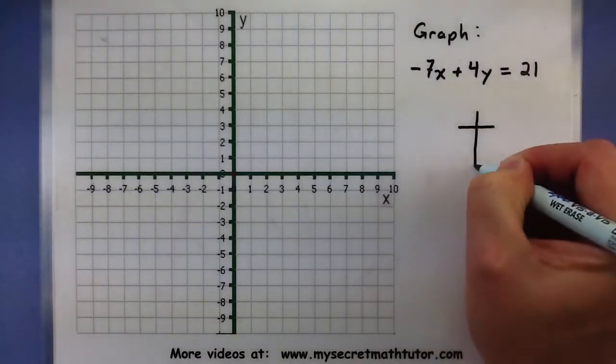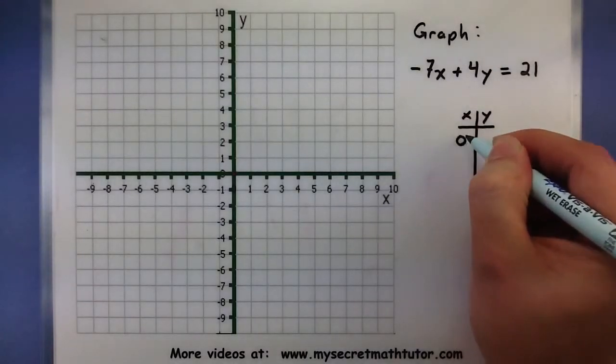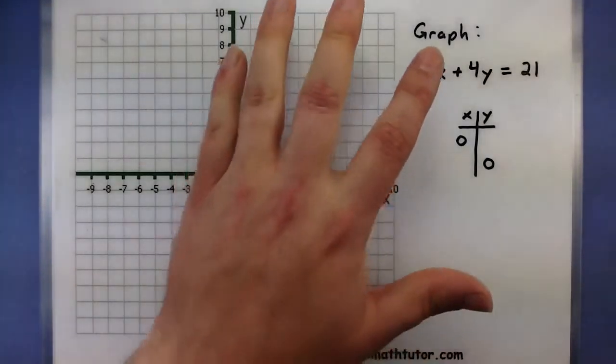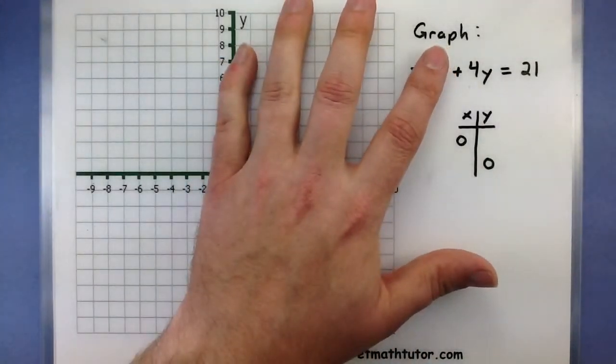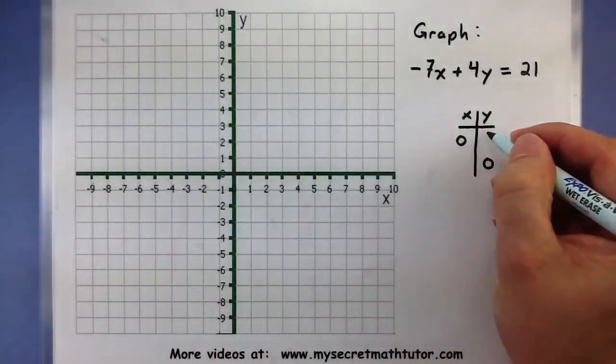So again, we'll make our little chart here. And we'll plug in a 0 for x and a 0 for y. Okay, so x equals 0. Looks like it would force my y to be a 21 fourths.